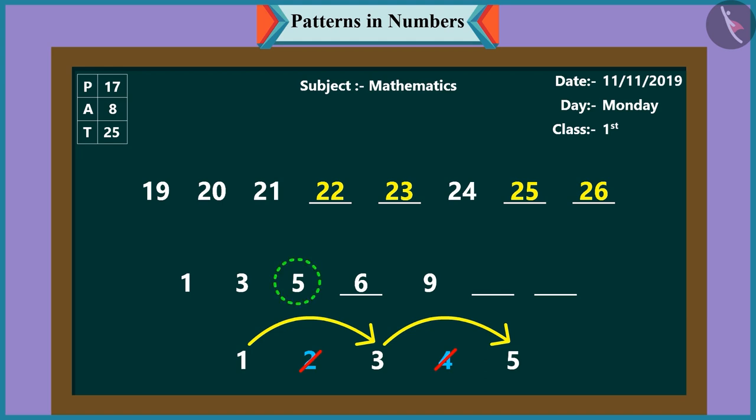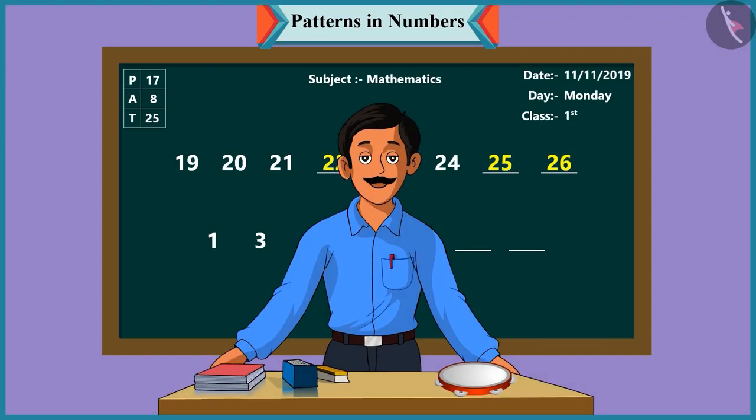Yes. So, like this, after five comes seven and not six. Well done, Chutki.